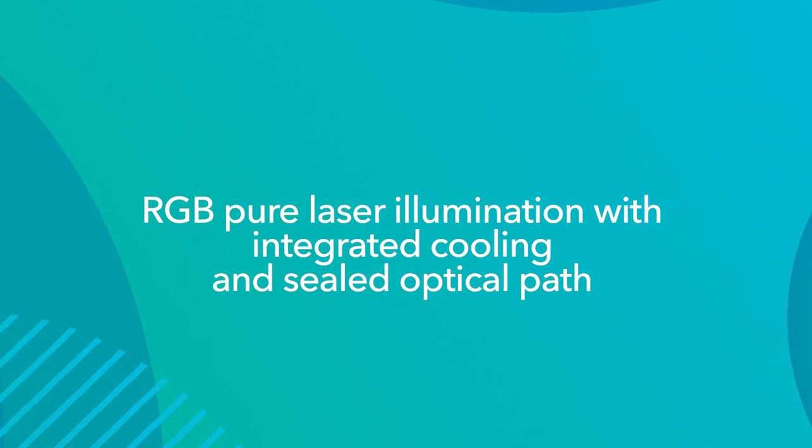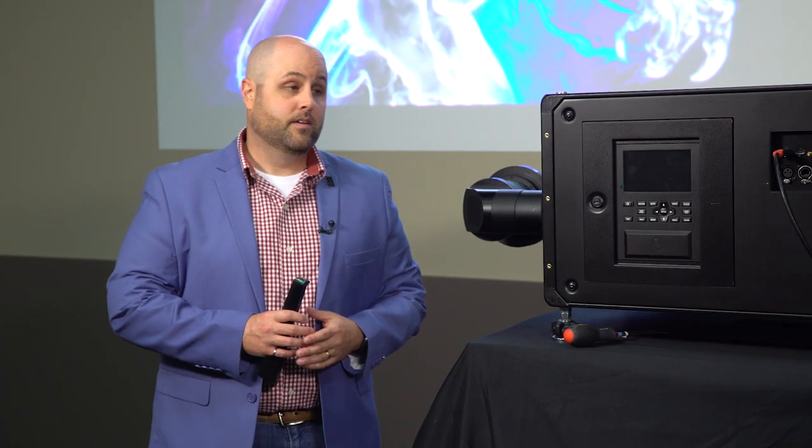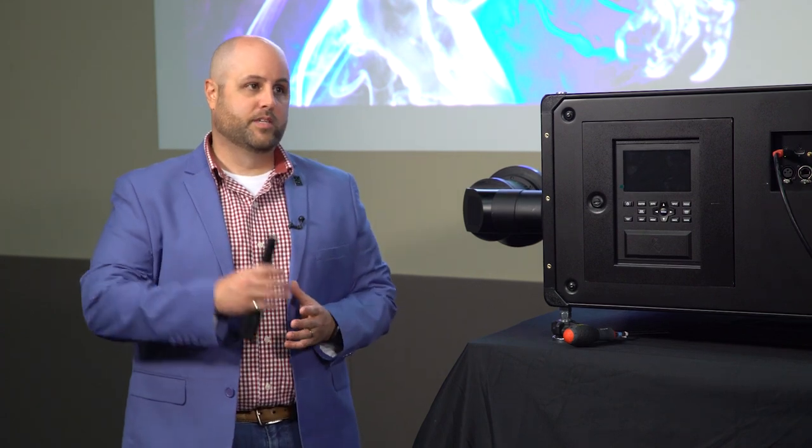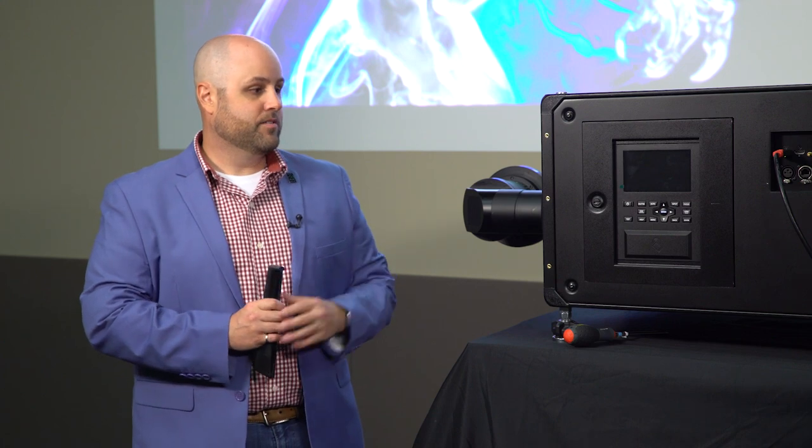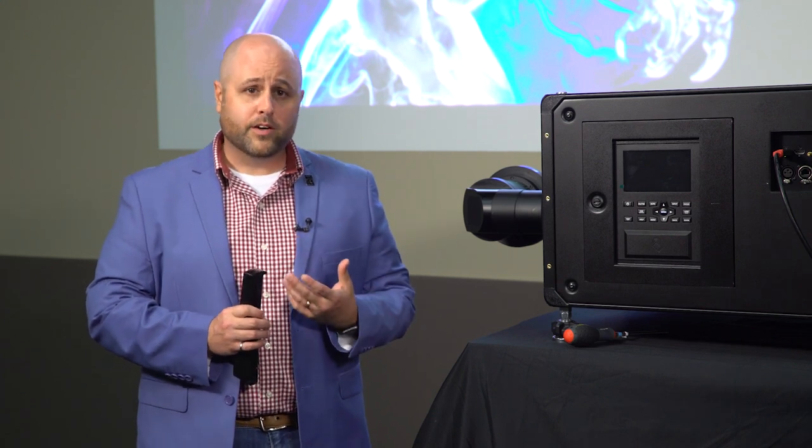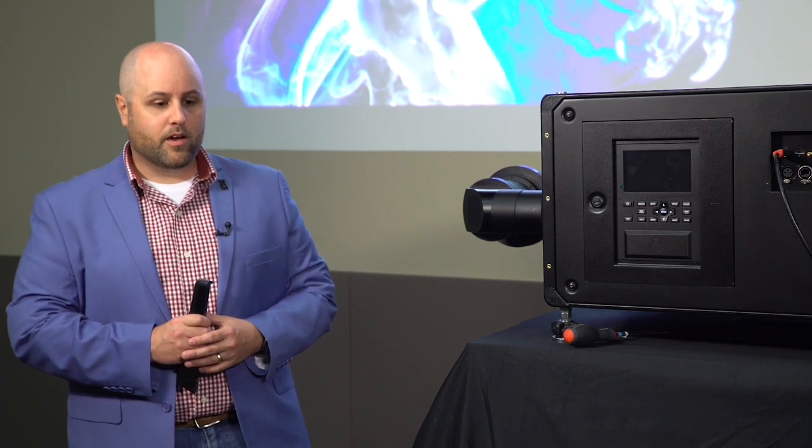So you said you normally start with the illumination source. Tell us a bit more about that. Yeah, so this is a pure RGB illumination source from Christie. This is really part of Christie's strategy. We're building an RGB illumination projector. It's the only 30,000 lumen pure RGB projector on the market. The key advantage of pure RGB illumination technology is it gives our customers the ability to display colors that other illumination technology just cannot.